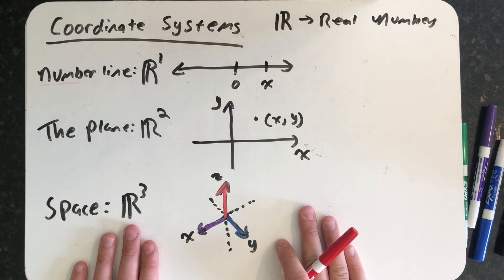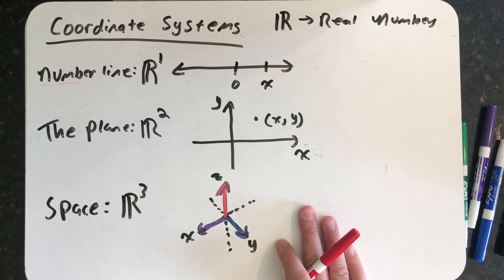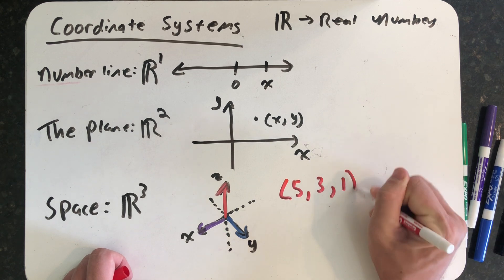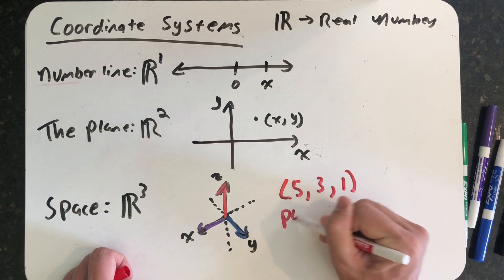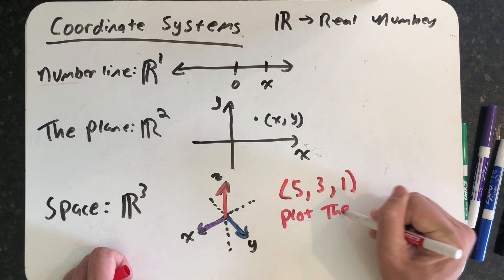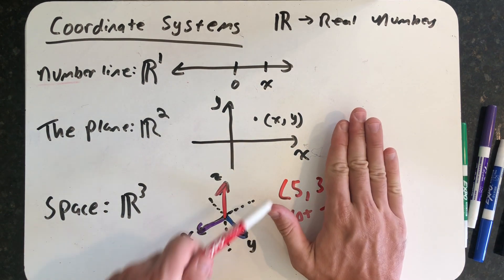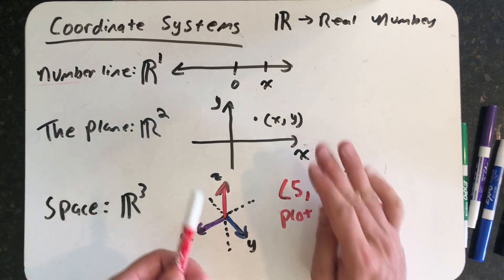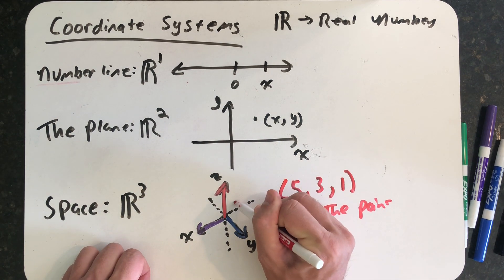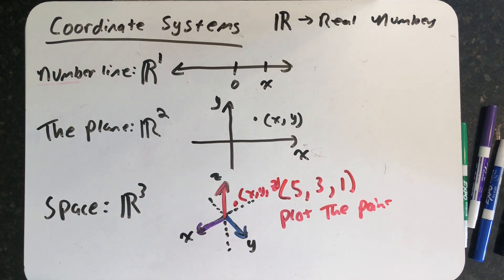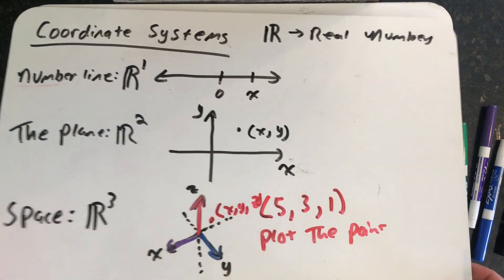Let's plot a point in space — let's imagine plotting the point (5, 3, 1). If I was in the plane and just asked to plot x comma y, that'd be easy. But here, whatever point I'm getting ready to plot should have an x coordinate, a y coordinate, and a z coordinate. So let's think about where that point should be, and maybe first we can do it intuitively.